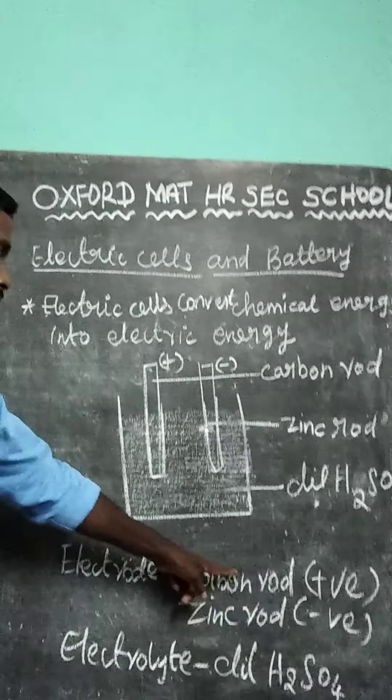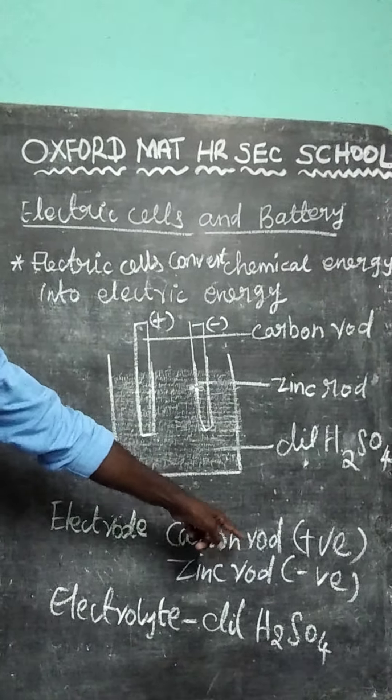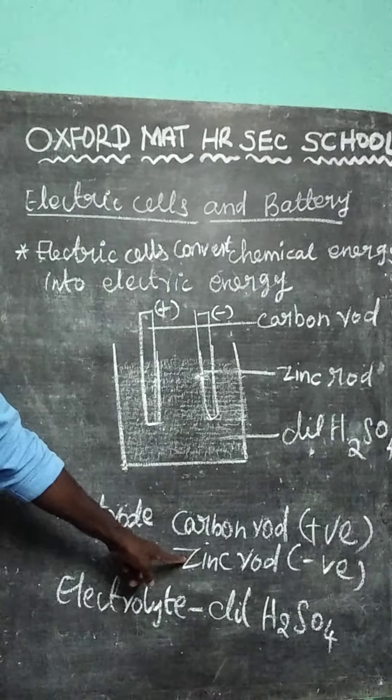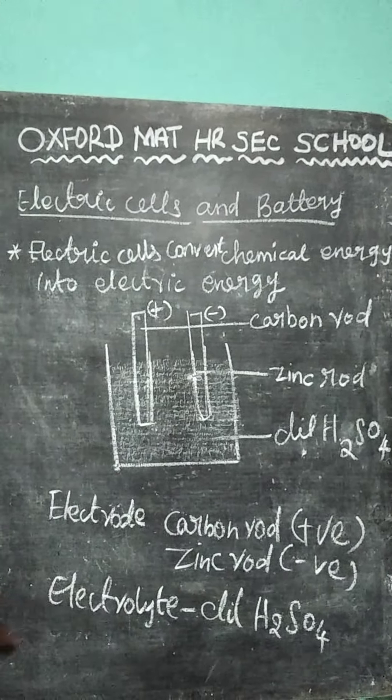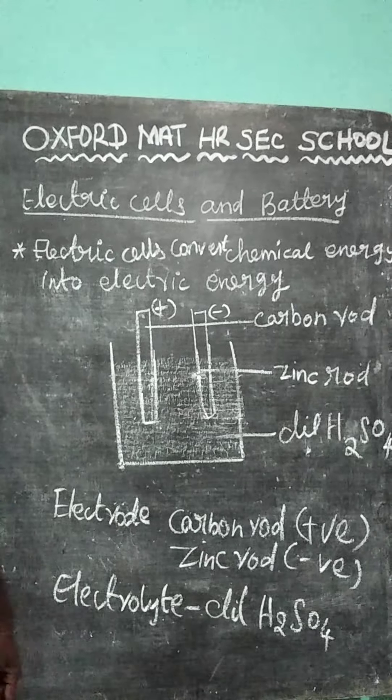Electrolyte solution act as a dilute sulfuric acid H2SO4. Here carbon rod act as a positive terminal. Zinc rod act as a negative terminal. Electrolyte act as a dilute sulfuric acid.